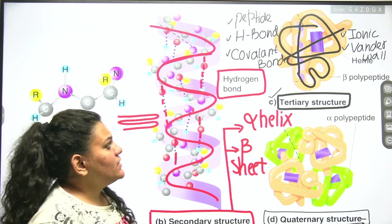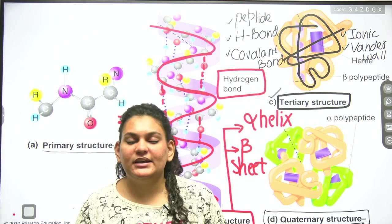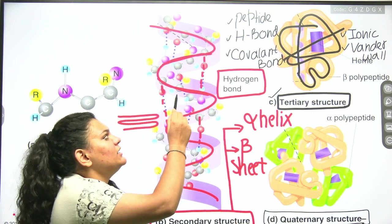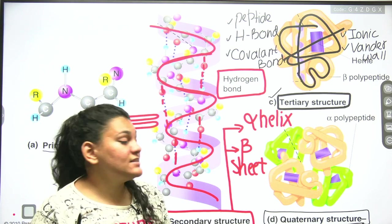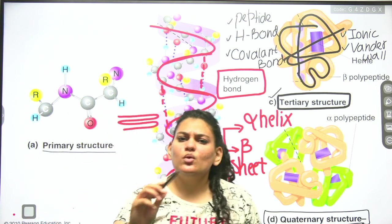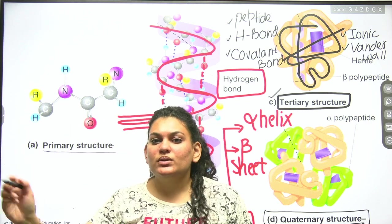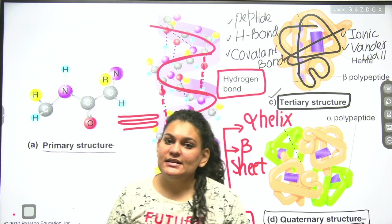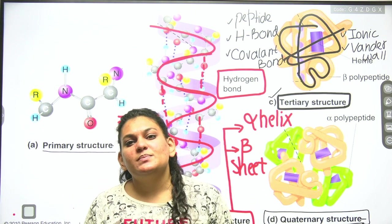To recap: Primary structure is simple — amino acids joined by peptide bonds. Secondary structure is more complicated — the chain coils via hydrogen bonds, forming alpha helix or beta sheet types. Tertiary structure is highly folded with bonds including peptide, H-bond, covalent, ionic, and van der Waals forces. Quaternary structure forms when two or more polypeptide chains join together, with all types of bonds present.